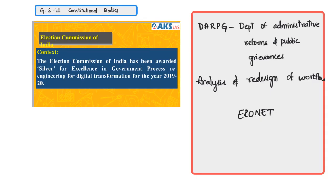The next article talks about the award received by the Election Commission of India for excellence in government process re-engineering and digital transformation for the year 2019-2020. This award is given by the Department of Administrative Reforms and Public Grievances to any government organization that is involved in analyzing and redesigning workflows, where such redesign has resulted in measurable improvement in efficiency, effectiveness, cost, quality, or service delivery.